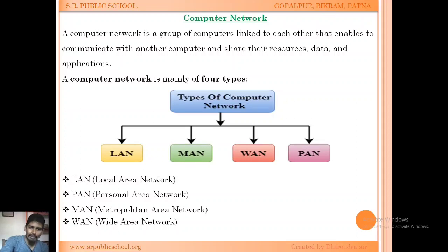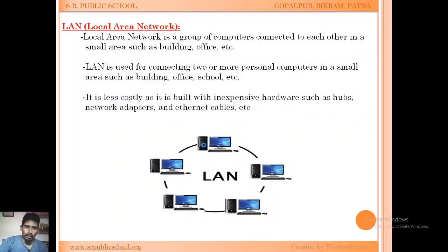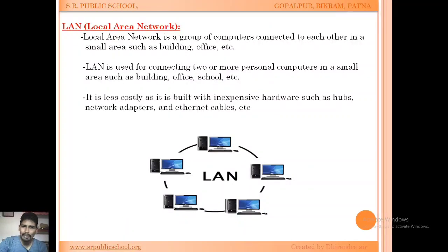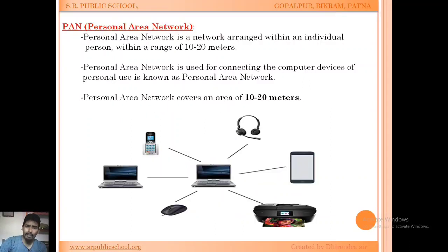So the types of computer network are: LAN (Local Area Network), WAN (Wide Area Network), MAN (Metropolitan Area Network), and PAN (Personal Area Network). Local Area Network is established in a building, office, or school campus. Personal Area Network covers a range of 10 to 20 meters for an individual person.